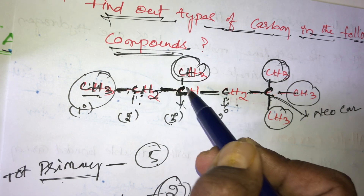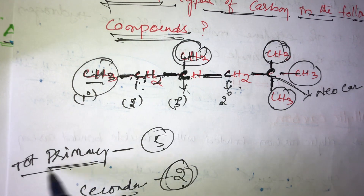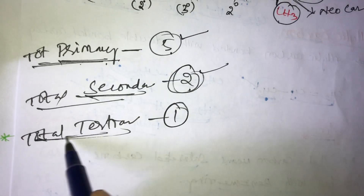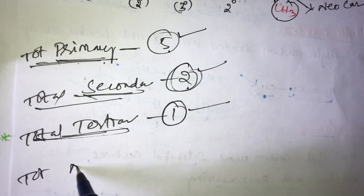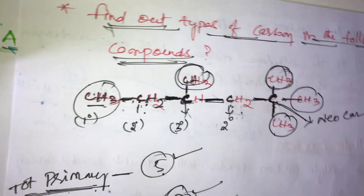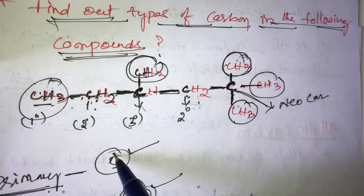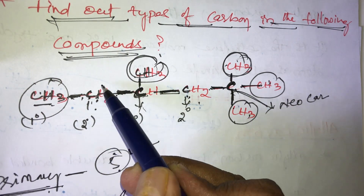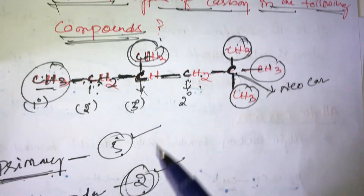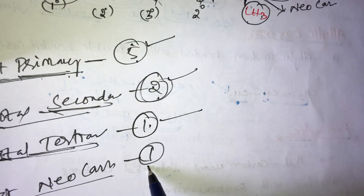This tertiary carbon is attached to the left side, upper side, and right side. In this compound: total primary carbons are five, total secondary carbons are two, total tertiary carbons are one, and total neo carbons are one. Primary carbons: 1, 2, 3, 4, 5. Secondary carbons: two. Tertiary: one. Neo carbon: one.